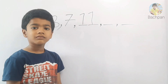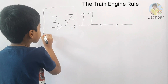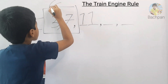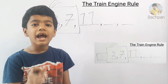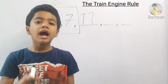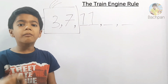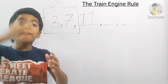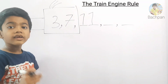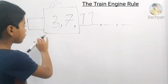Here is Rule number 2: The Train Engine Rule. Let's apply the engine rule. Step number 1: focus on the first number and second number only. What is the first number? 3. What is the second number? 7. Let's subtract the smaller number from the bigger number. The smaller number is 3, the bigger number is 7. What is 7 minus 3? That gives us 4. So write here 4.